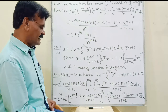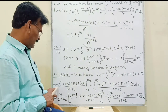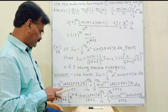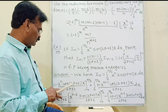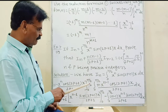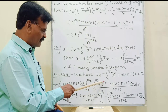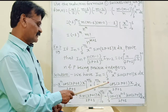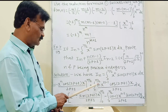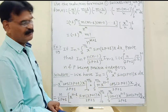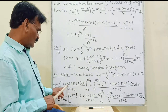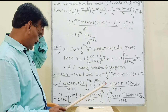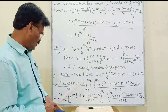Solution: Iₙ = integral from 0 to π/2 of x^n sin(2p+1)x dx. Integrating by parts taking x^n as the first function, we get: minus x^n cos(2p+1)x divided by (2p+1), evaluated from 0 to π/2, plus the integral from 0 to π/2 of n x^(n-1) cos(2p+1)x divided by (2p+1) dx. At the upper limit, cos(2p+1)(π/2) evaluates to 0, and at the lower limit 0^n = 0, so the first term vanishes.